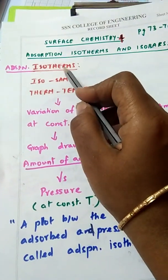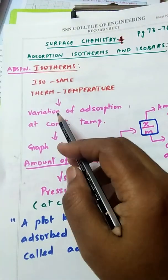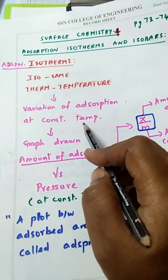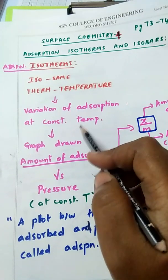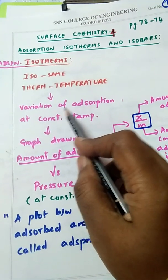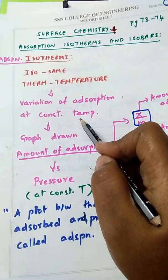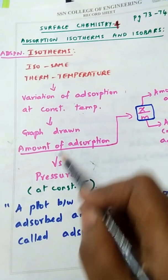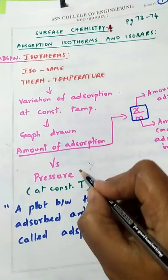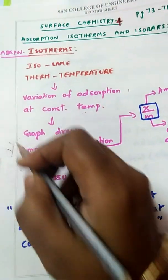Adsorption isotherms — 'iso' means same, 'therm' means temperature. So an adsorption isotherm studies the variation of adsorption at constant temperature, where pressure is changing. The variation of adsorption with respect to pressure at constant temperature is studied in the form of a graph drawn between amount of adsorption versus pressure, with pressure on the x-axis and amount of adsorption on the y-axis.